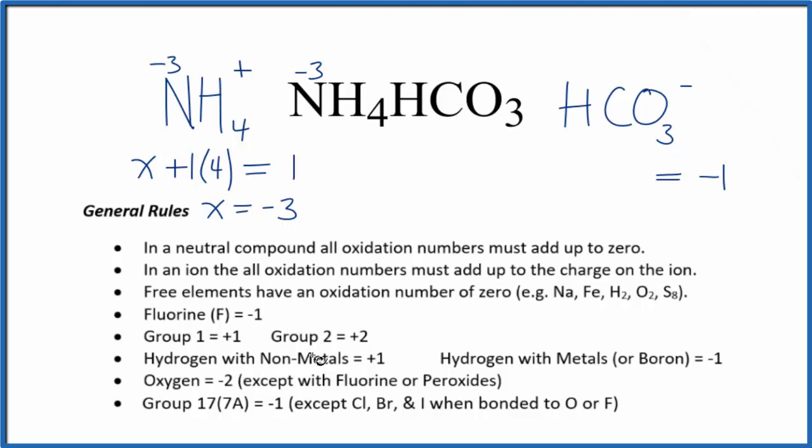Hydrogen, when it's bonded to nonmetals again, that's plus 1. So we have 1 plus, we don't know carbon. That's not on our list. And then oxygen is almost always minus 2, with a few exceptions. So we have minus 2, but we have 3 oxygen atoms.